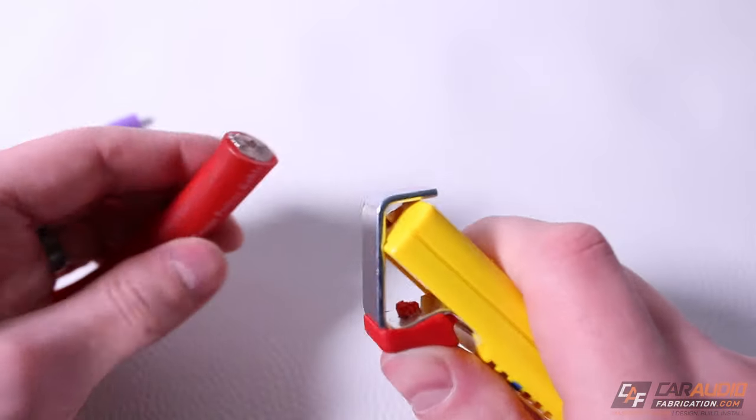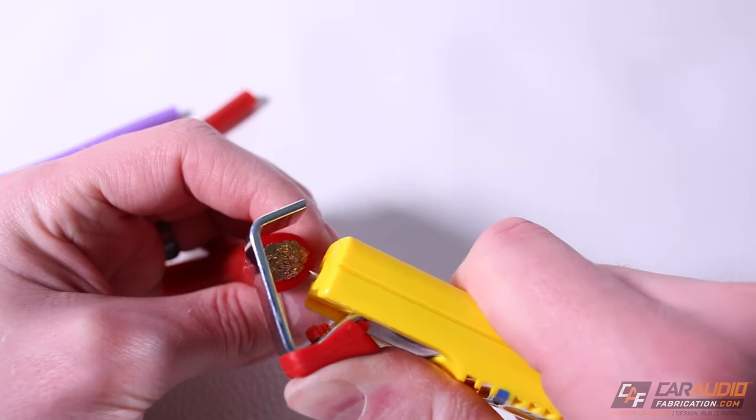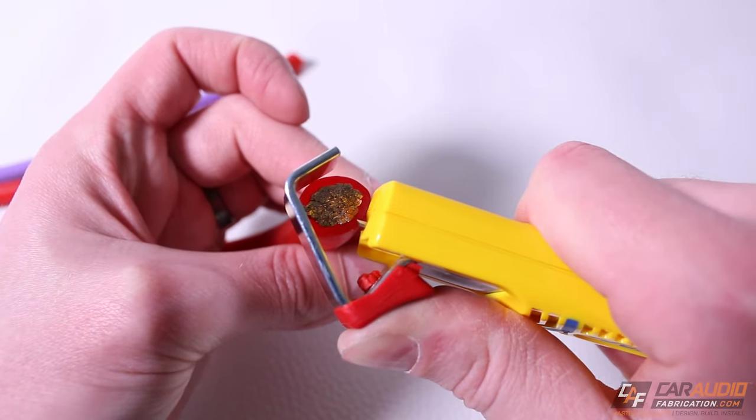The purpose of having that adjustment is so that we can adjust for the different thicknesses of insulation on our wire.